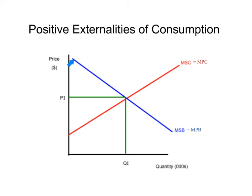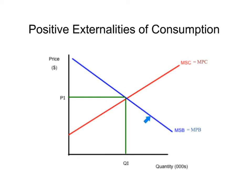We know it's consumption because this is the old demand curve. If this were production — negative or positive — then there's going to be a shift in the marginal social cost or the marginal private cost curve, which is the old supply curve. So we're doing consumption, it's going to be a positive externality, so something's going to happen to one of these two lines: the marginal social benefit or the marginal private benefit.